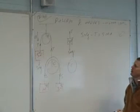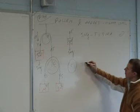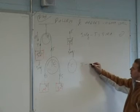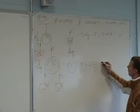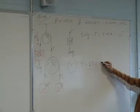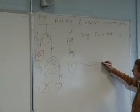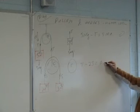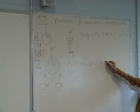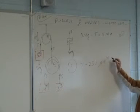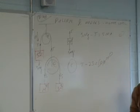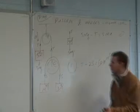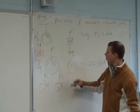The equation of motion for particle C is: T minus 2S equals mass times acceleration. The mass is zero, so the whole right-hand side goes to zero. That gives us T minus 2S equals zero. That's equation number two.